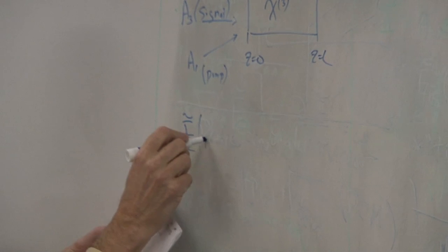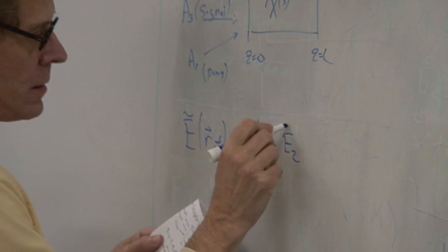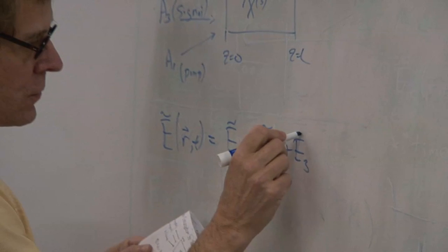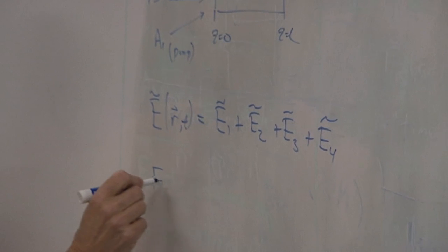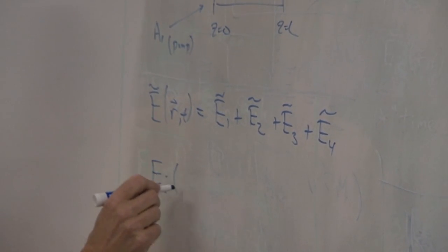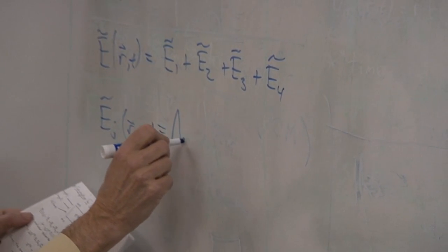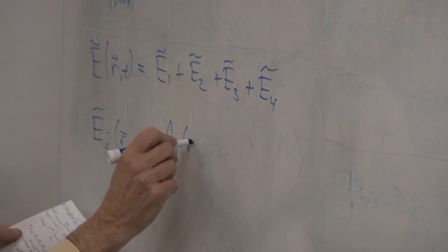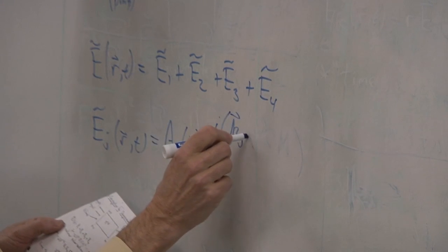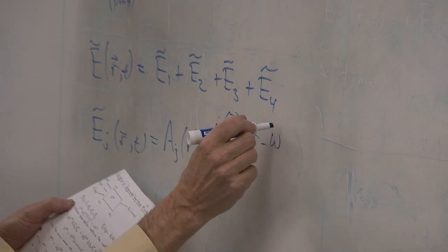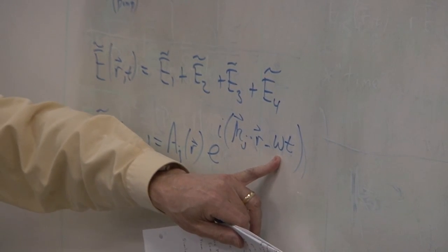E(R,T) = E1 + E2 + E3 + E4, and E_j(R,T) = A_j(R) · exp(i K_j · R − ωT). Note: not ω_j·T, because all four waves are at the same frequency.